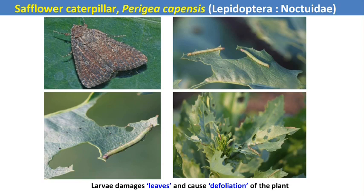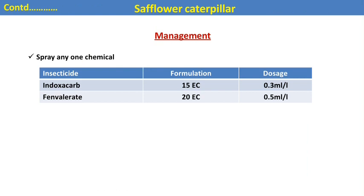The next pest is safflower caterpillar. It is a Lepidopteran pest. Egg laying takes place on the surface of the leaves, and the larvae emerge. The caterpillar voraciously feeds on the leaves from margin up to the mid-rib, causing defoliation in the safflower crop and indirectly reducing yield. Indoxacarb and phenthoate are effective and recommended insecticides against the safflower caterpillar.